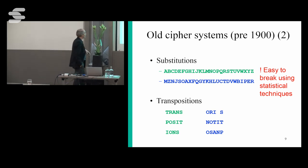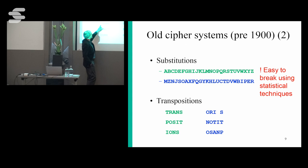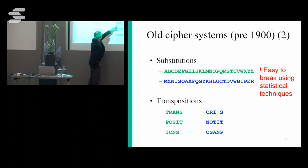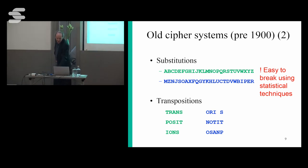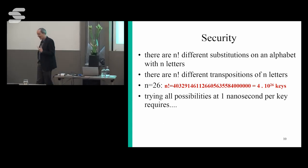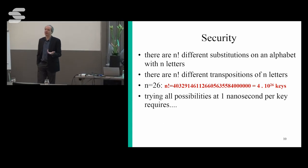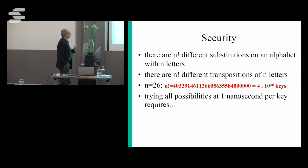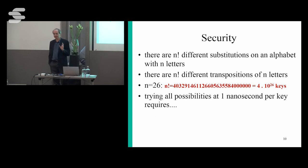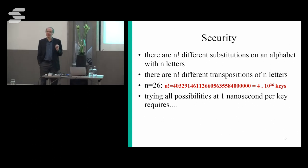Even today, breaking such a system by trying all possible keys would be quite expensive. Assume you have very fast code doing it in one nanosecond per key — that's 10⁹ keys per second. You have about 100,000 seconds in a day and about 400 days in a year. On one computer it would still take 10¹⁰ years to try all possible keys, and even with a million computers it would still take 10,000 years.